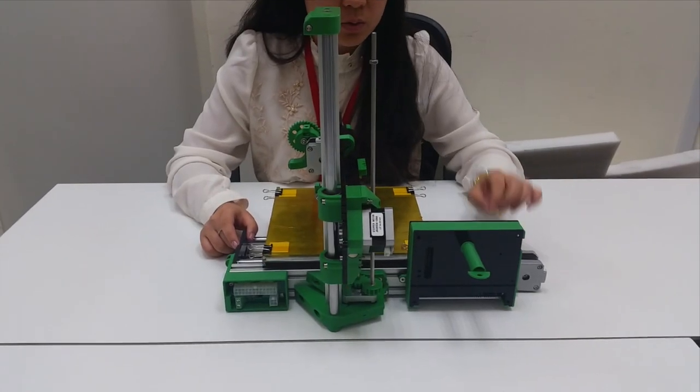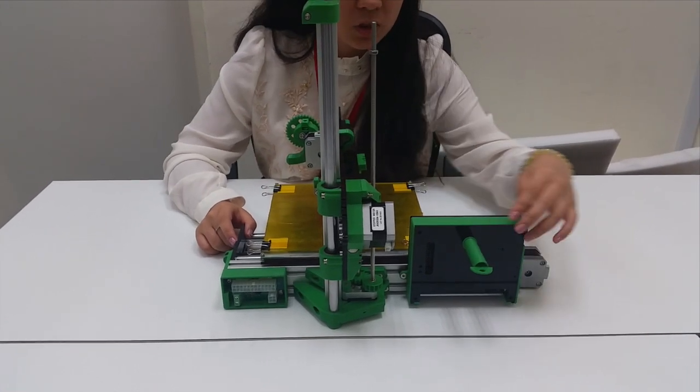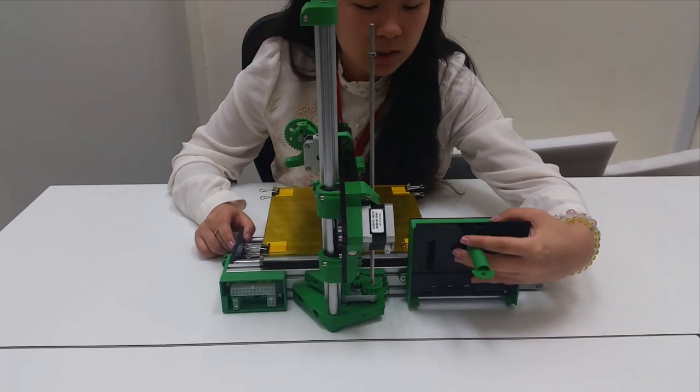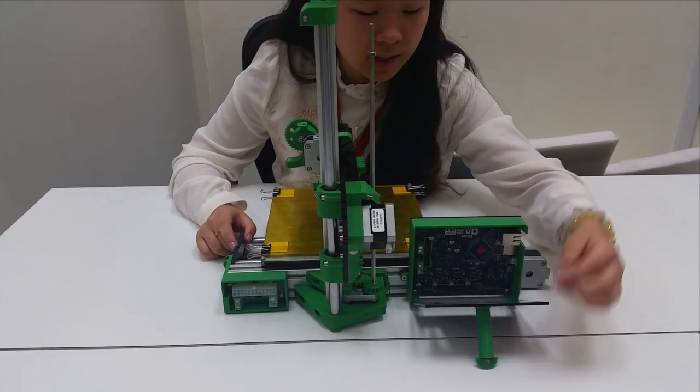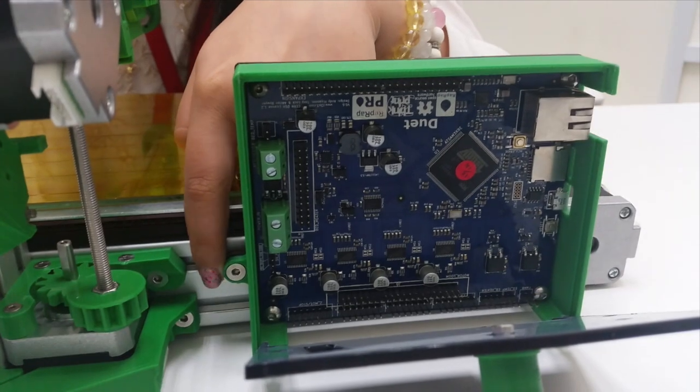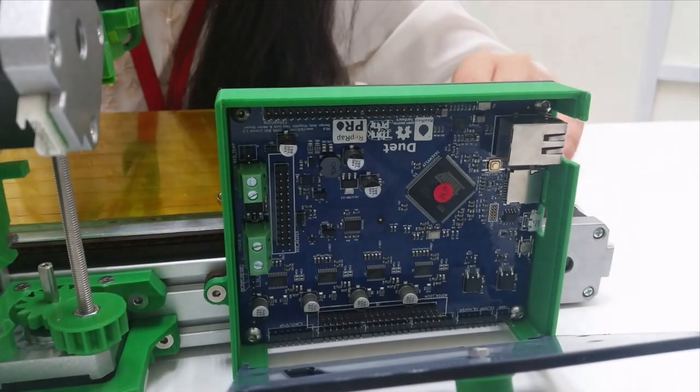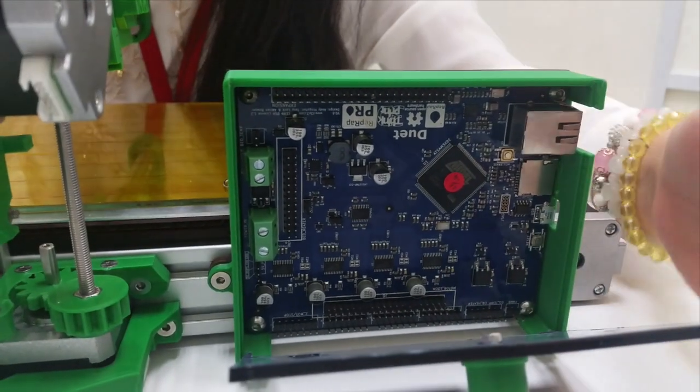The next step is to install this electronics enclosure over here. The screws are inside. One of the screws is outside of the box, and the other two are inside. The screws are attached to the channel of the y-axis.